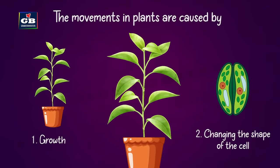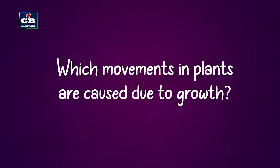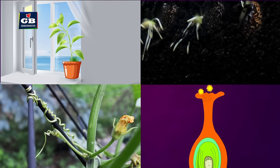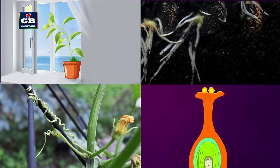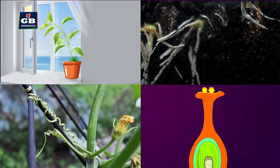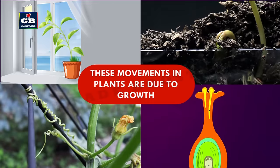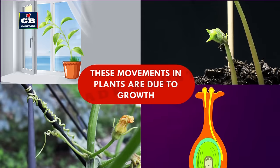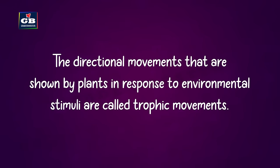Movements in plants are caused either by growth or by changing the shape of the cell. Movements such as the stem moving towards sunlight, roots growing towards soil, tendrils coiling around support, and pollen tubes growing towards the ovule are all caused due to growth, and these movements are responses to different stimuli.